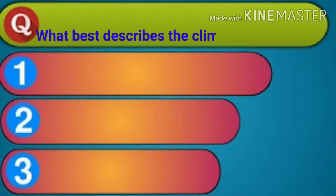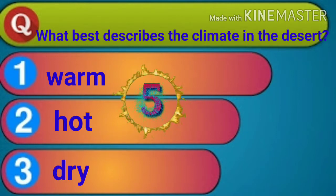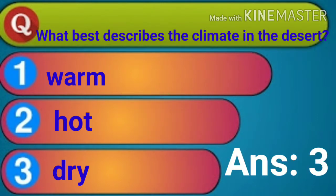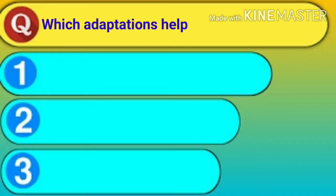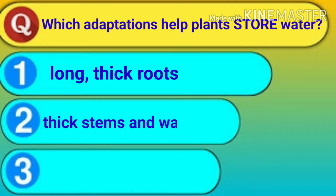What best describes the climate in a desert? First option: warm. Second option: hot. Third option: dry. You have five seconds to try yourself, then I will show the final answer. The answer is third — dry.